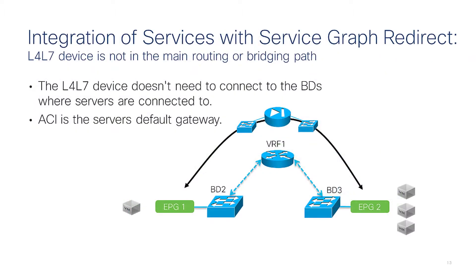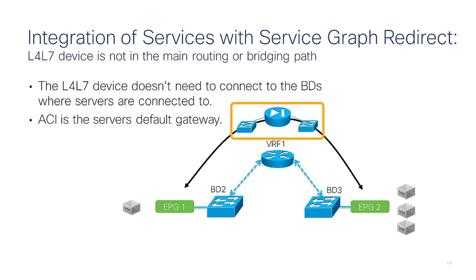This is an illustration of the service graph redirect integration. The main differences are that the load balancer or firewall don't need to be on the same bridge domain as the servers. The load balancer or firewalls are effectively outside of the main routing and bridging path, and ACI allows you to forward traffic through the firewall path — either for all traffic or for a subset of the traffic.